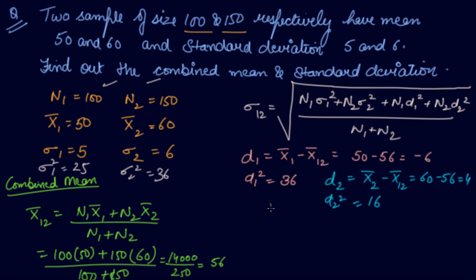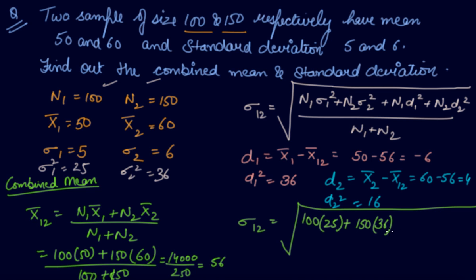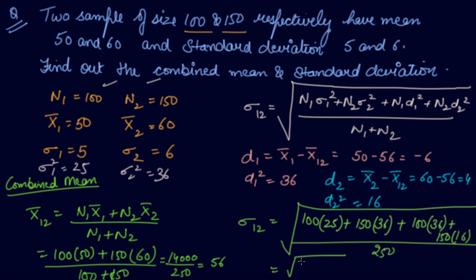Putting all values in: 100 into 25, plus 150 into 36, plus 100 into 36, plus 150 into 16, all divided by 250. Solving this gives 13900 divided by 250, then taking the square root gives approximately 7.46. So 7.46 is the combined standard deviation.